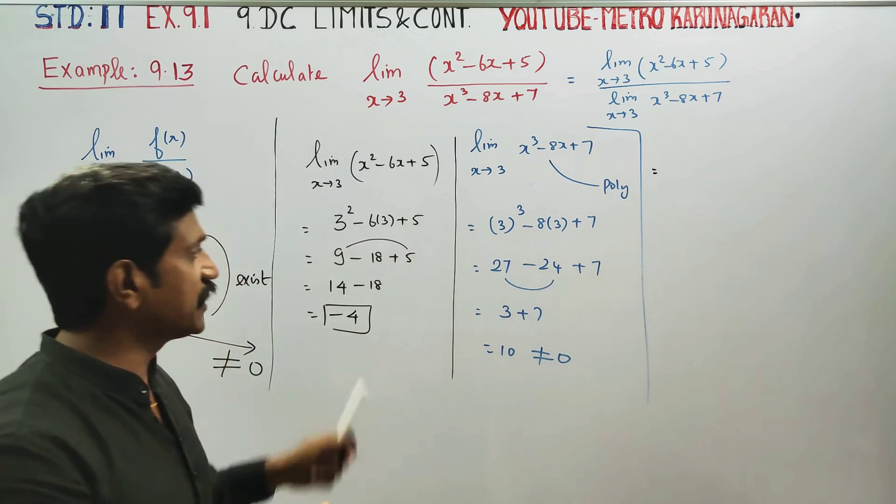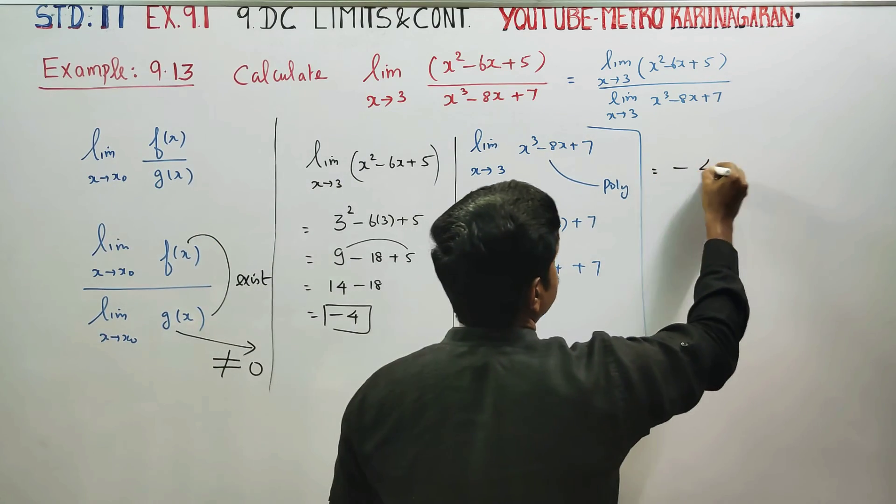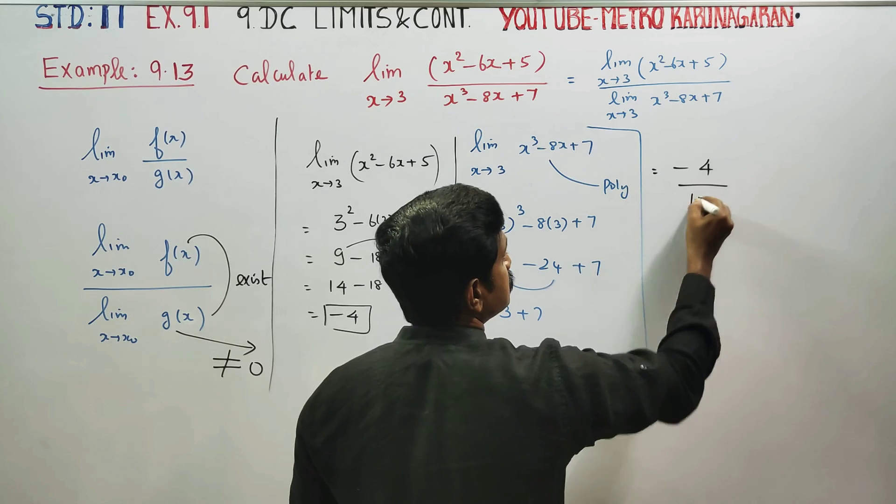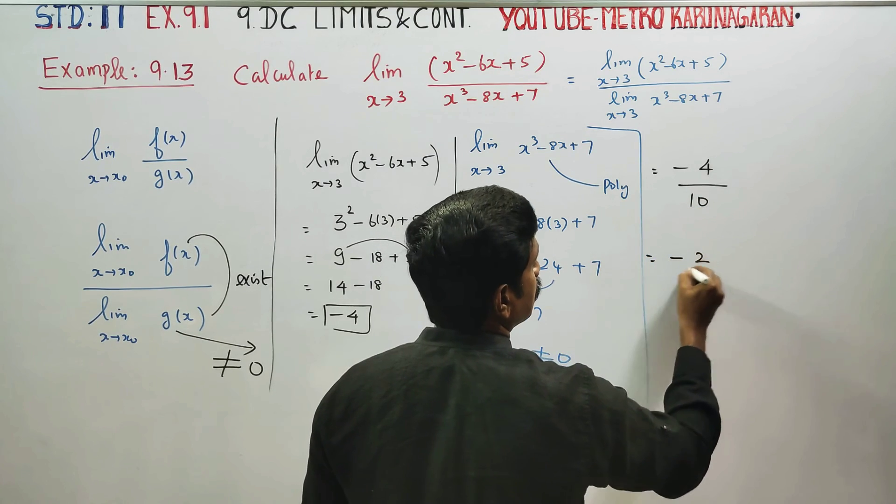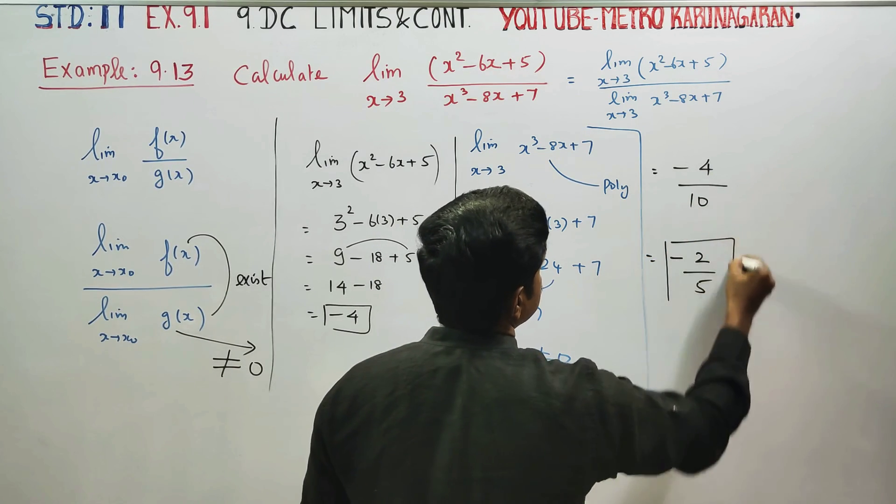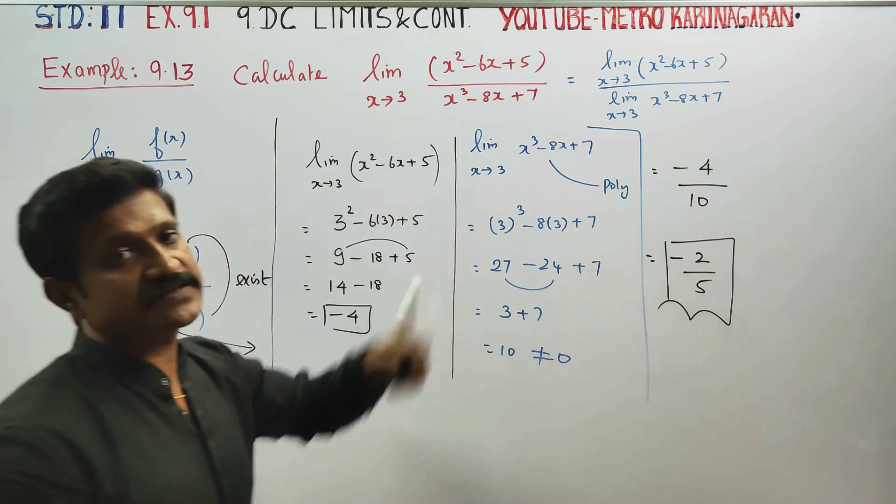Numerator's answer is -4. Denominator's answer is 10. Then cancel the terms, and your answer will be -2/5. This will be the final answer.